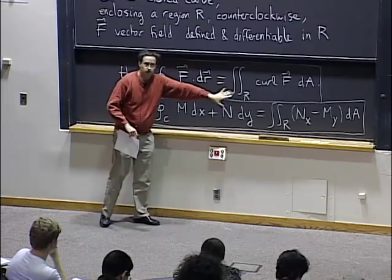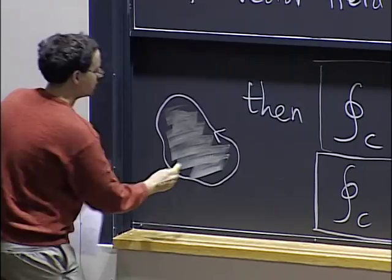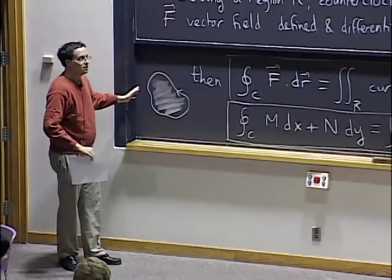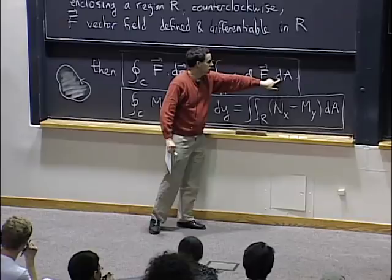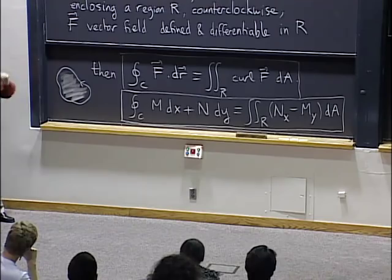The way in which you compute these things is completely different. The left-hand side lives only on the curve, while the right-hand side lives everywhere in the region inside. On the left, x and y are related — they live on the curve. On the right, x and y are independent with bounds between them. And of course what you are integrating is different: here it's a line integral for work, here it's a double integral of some function of x and y. It's a very perplexing statement at first, but it's a very powerful tool.